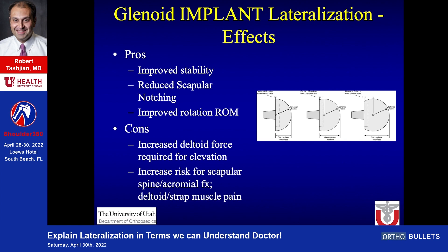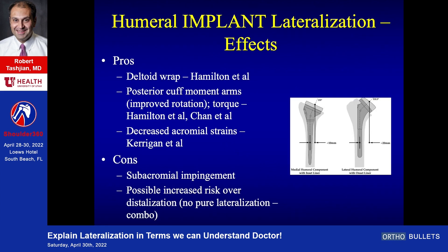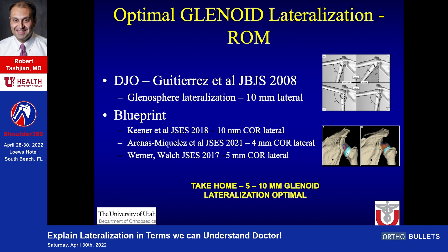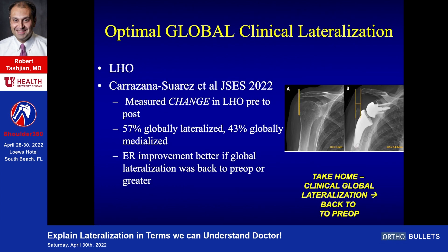We know the various effects of implant glenoid lateralization, including improved stability, reduced notching, and improved range of motion. There are also various effects of humeral implant lateralization, including improved deltoid wrap. Howard has taught us about posterior cuff moment arms, and George has taught us about torque in the posterior rotator cuff and decreasing acromial strains. There is an optimal glenoid lateralization for range of motion — theoretically Jay has shown us that somewhere between five to ten millimeters of glenoid lateralization is optimal.